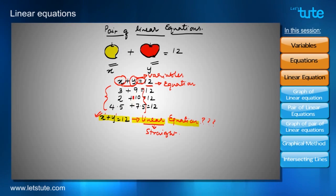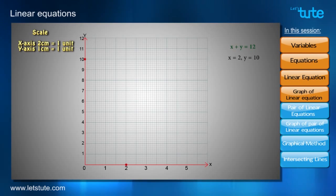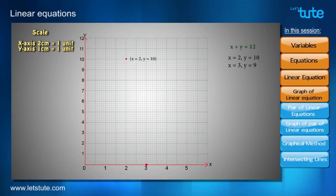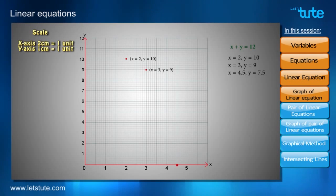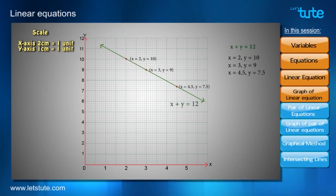To verify that X plus Y equals 12 gives a straight line, let's plot the values we assumed on a graph. X=2, Y=10 gives one point; X=3, Y=9 gives another point; X=4.5, Y=7.5 gives a third point. Joining all three points, we can see that we get a straight line — confirming that when powers of variables are 1, the equation gives a straight line, and is therefore called a linear equation.